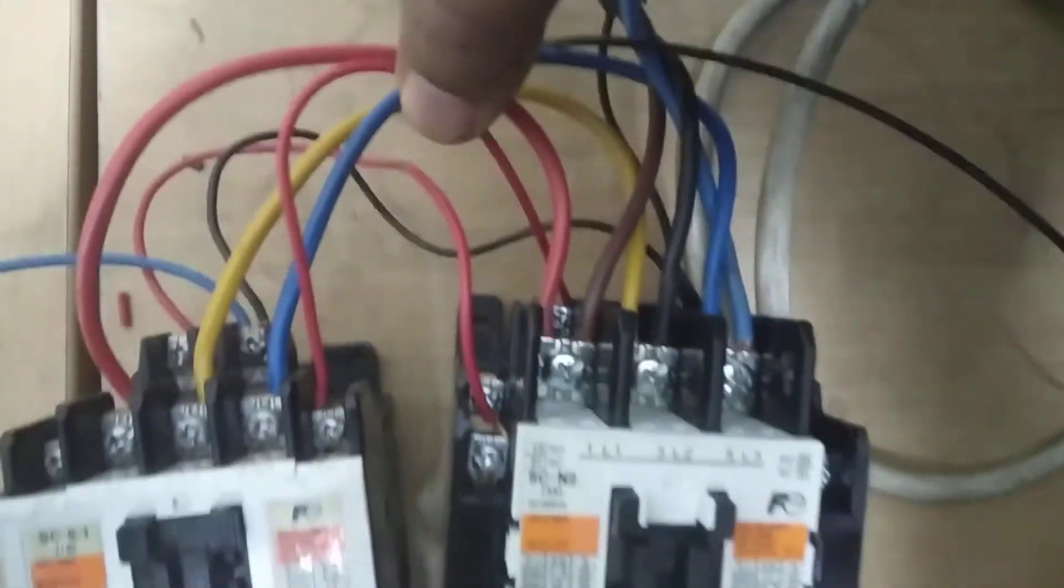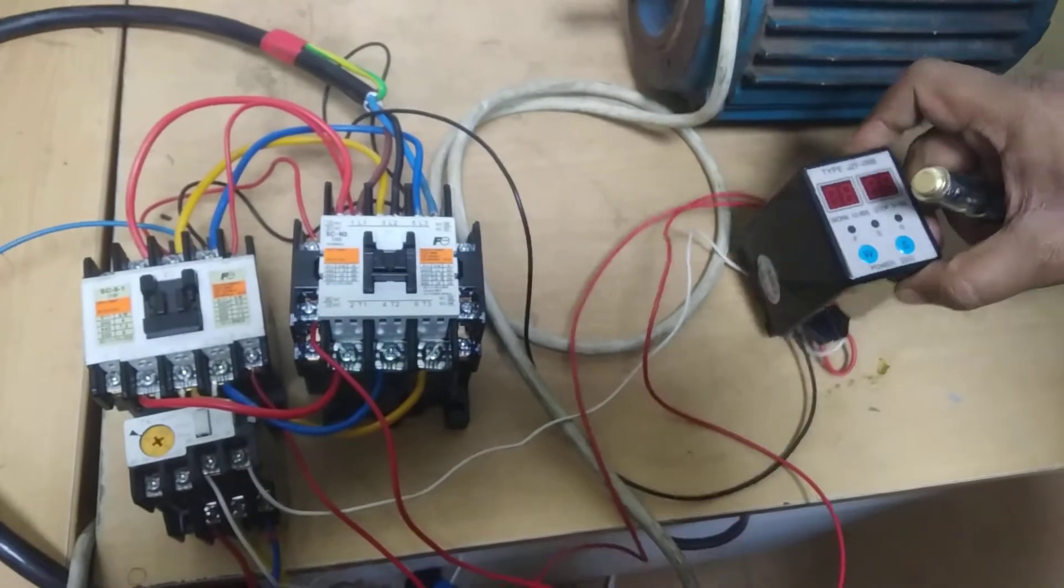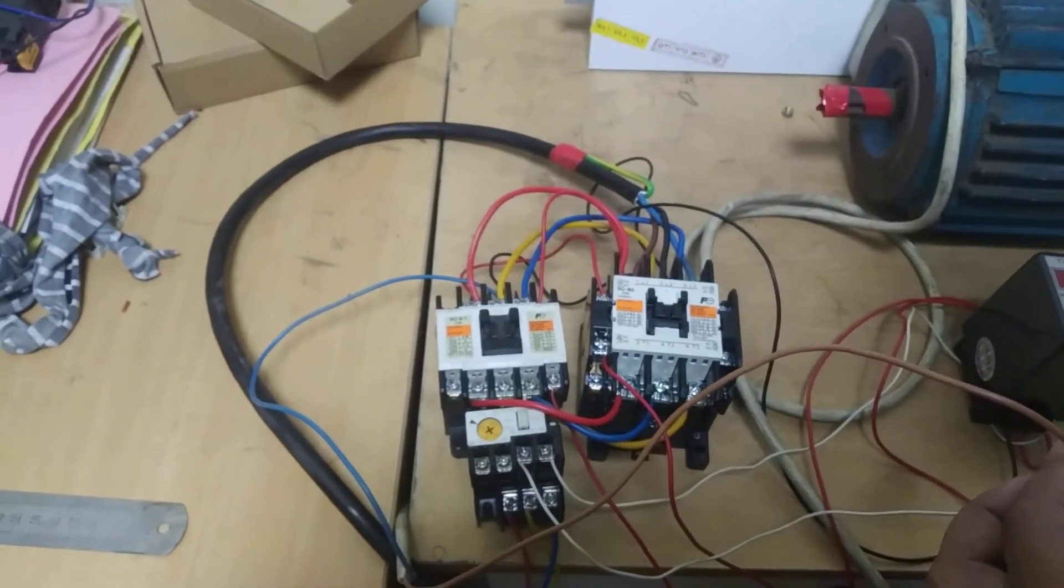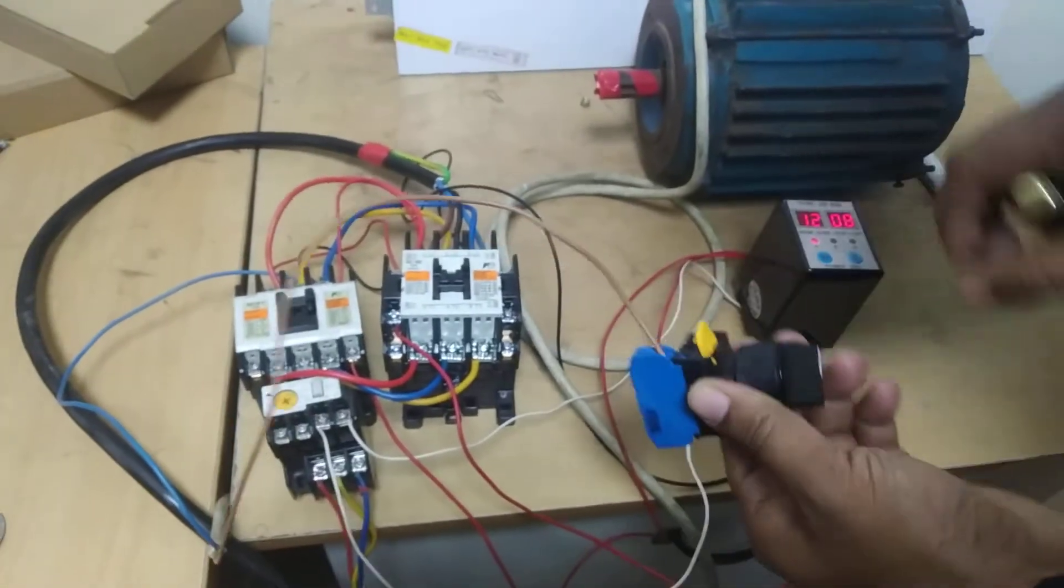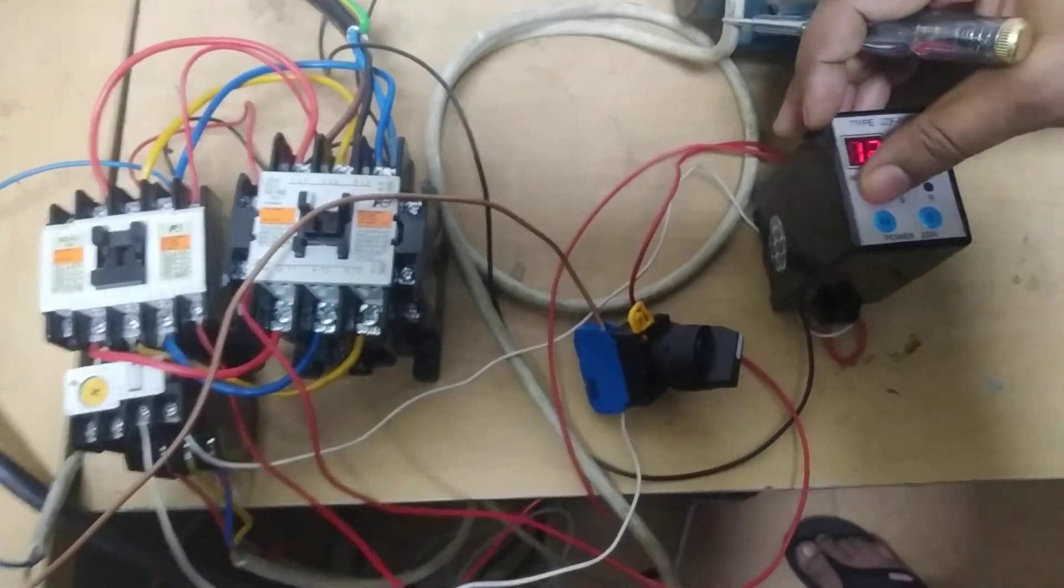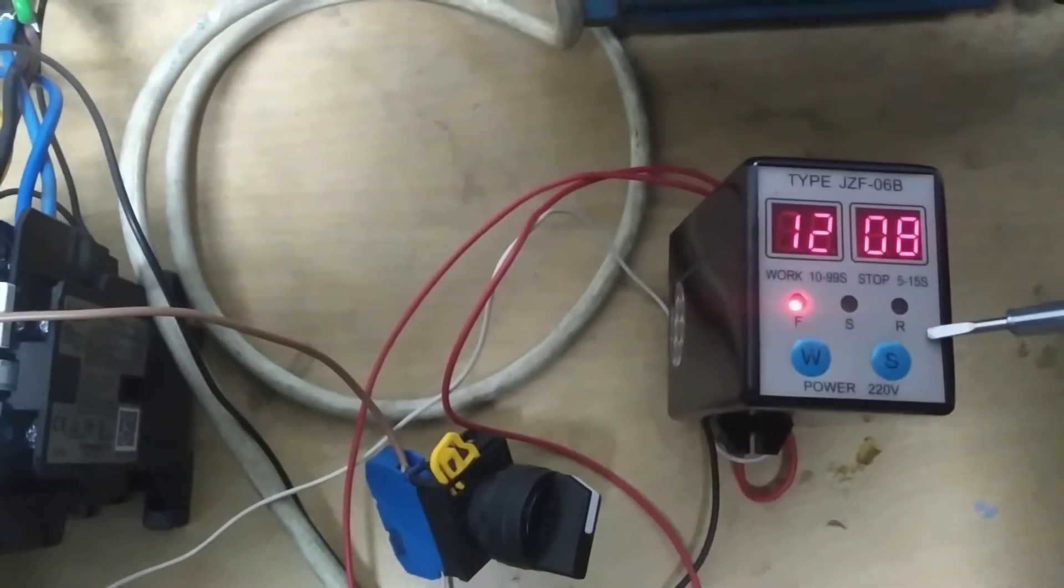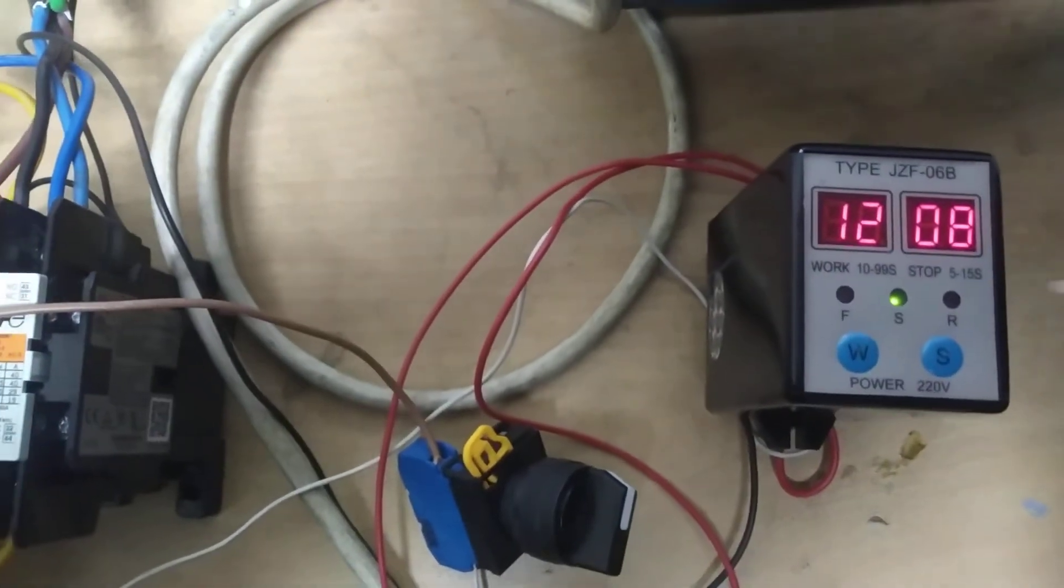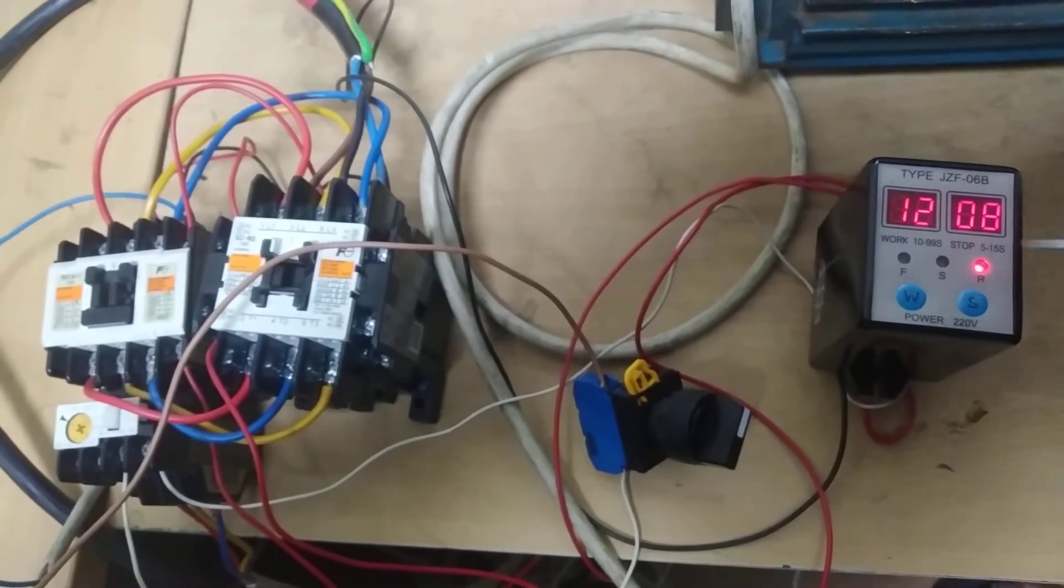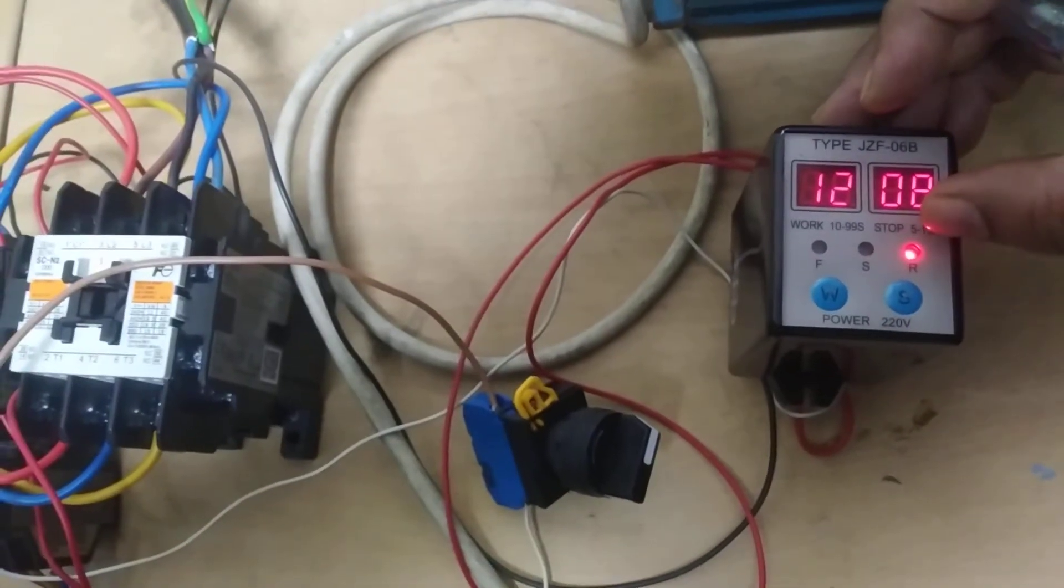Power is supplied to activate the twin timer. The twin timer has forward F button, stop button, and reverse button. The twin timer work time is set to 12 seconds. When you press stop, it stops. When you press reverse, it reverses.